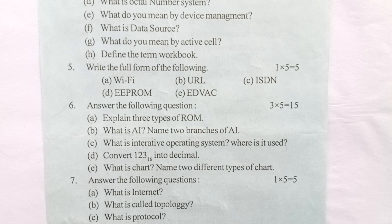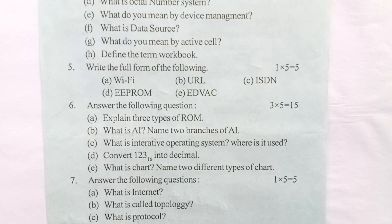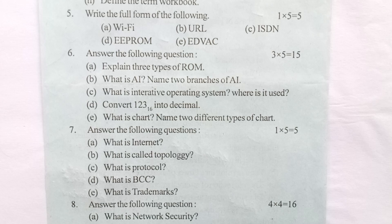Question 6: Answer the following, carrying 3×5 = 15 marks. (a) Explain three types of ROM. (b) What is AI? Name two branches of AI. (c) What is an interactive operating system and where is it used? (d) Convert 123 hexadecimal into decimal. (e) What is a chart? Name two different types of chart.